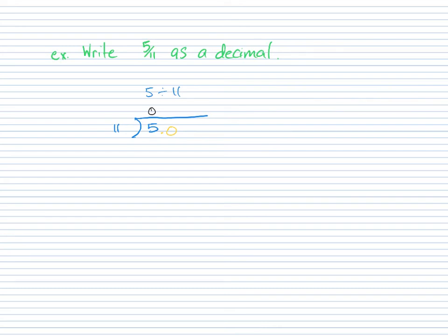Now, we just have to make sure that we line up that decimal point in the answer. So 11 goes into 50 4 times, but 11 times 50 is 44. And we have to subtract in order to get that first remainder, the remainder is 6.